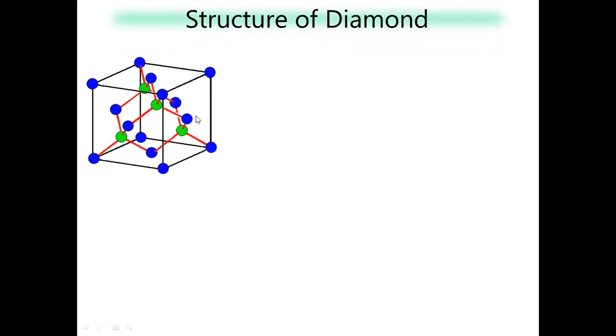Structure of diamond: it is equivalent to ZnS structure, because all positions of zinc and sulfur are occupied by carbon only. In diamond, carbon is at corners plus faces plus alternate body diagonal. Green balls are carbon atoms and blue balls are also carbon atoms. In ZnS, half of the total voids are occupied by zinc and the remaining are sulfide ions. But instead of writing zinc and sulfide, we write carbon — and that gives the diamond structure.